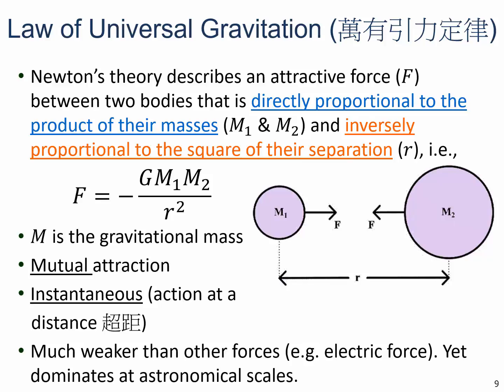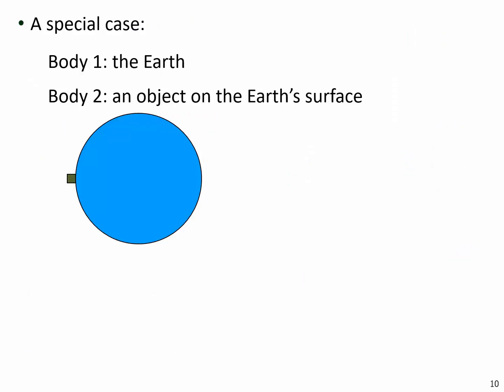Even though gravity is very weak, in astronomical situations it actually dominates. That's because the objects we are considering are massive, and also as a whole they are electrically neutral. Let's consider a special case: the first body is the Earth, and the second body is any object — for example, you or me — on the surface of the Earth. The distance between them is actually just the radius of the Earth.